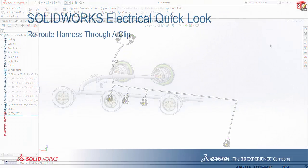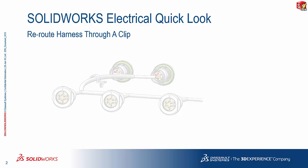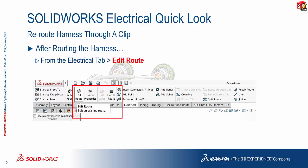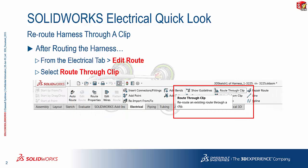Quick and simple. So quick recap of what we just saw: after we have routed the harness, the first thing we need to do is select edit route from the electrical tab. This allows us to access the routing information. And after that, we switch over to the route through clip command, which allows us to proceed with the rerouting.